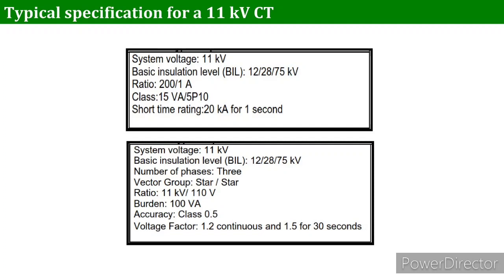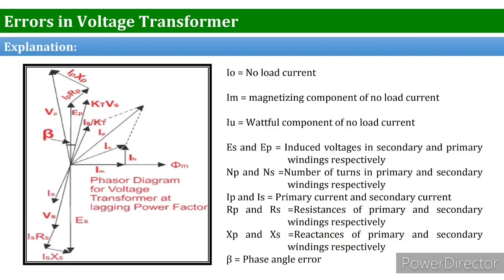Some typical specifications mentioned on the nameplate of a PT include: system voltage, BIL (basic insulation level) at three levels — 12, 28, and 75 — ratio, and accuracy class as discussed in the previous lecture. Additionally, burden ratings, accuracy class, voltage vectors, vector groups, and number of phases are all mentioned on the nameplate or data sheet. Before installing, you can refer to these parameters for reasonable selection of your potential transformer.